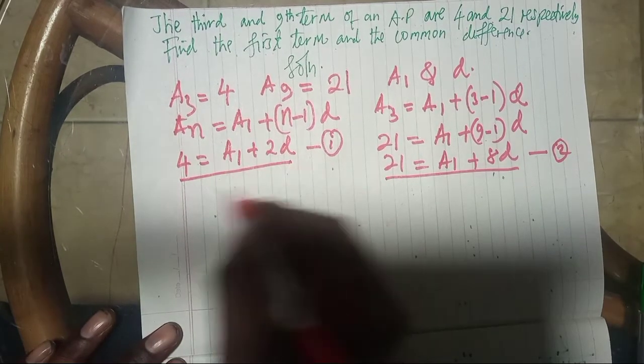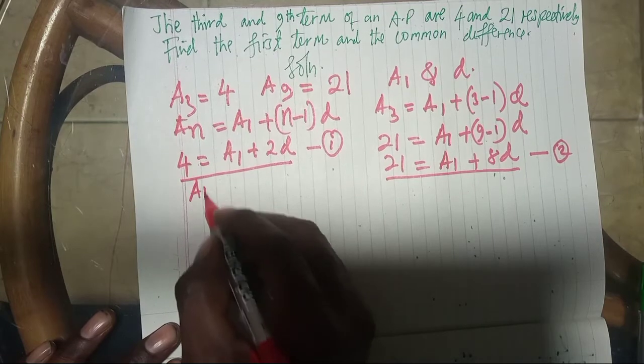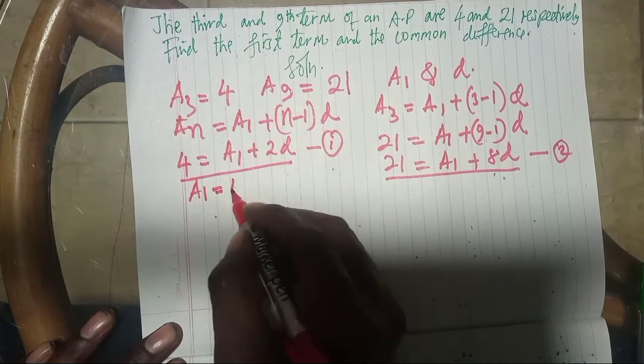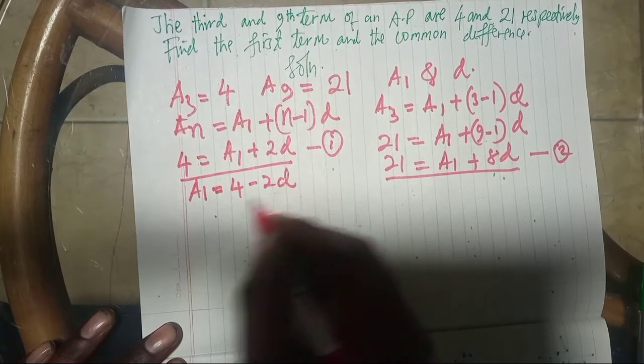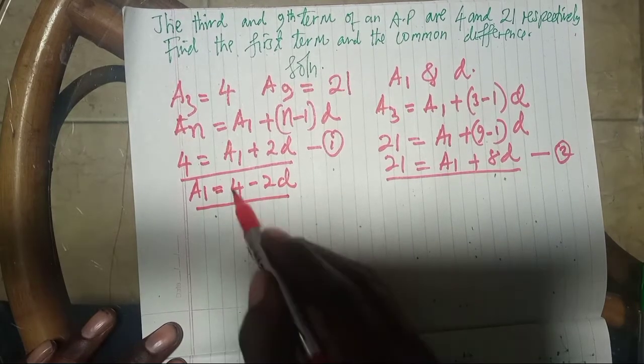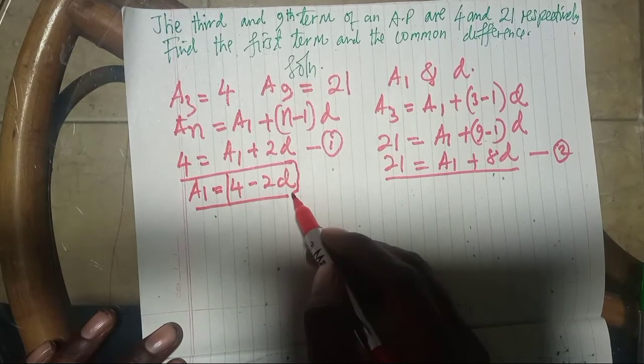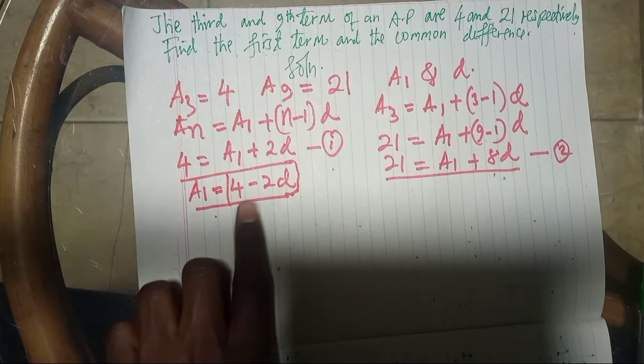Therefore, this is taken to the other side, therefore A1 is equal to 4 minus 2D. From here, we get that A1 is 4 minus 2D.